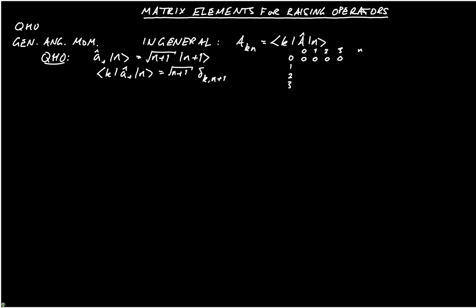If k is equal to 1, then if n is equal to 0, then k is equal to n plus 1. And we get a value of 1, and then we get further zeros. If k is 2, then we get an entry of root 2 when n equals 1. When k equals 3, then we get an entry of root 3, etc. And I'm going to put in some dots here to indicate that this continues on, because remember that we effectively have an infinite basis.